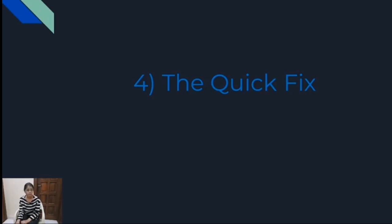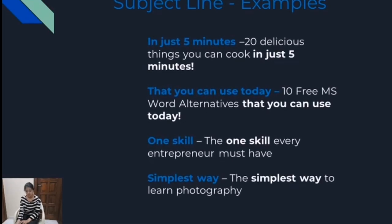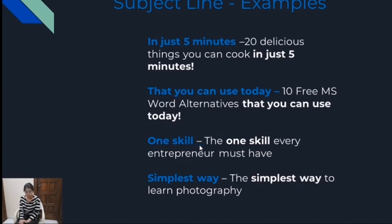Another type of subject line is the quick fix. Everybody is concerned about time — nobody has time to do anything, so they are looking for shortcuts. The quick fix is a very good way to provide them the easiest, shortcut solution. You can mention something like this in your subject line. Phrases you can use include: 'In just 5 minutes,' 'That you can use today,' 'One skill,' 'Simplest way,' 'Easiest way.' If you use these, you'll have more chances that people open your email. For example: '20 delicious things you can cook in just 5 minutes.' Other examples include: '10 free MS Word alternatives that you can use today,' 'The one skill every entrepreneur must have,' and 'The simplest way to learn photography.' These phrases are also very impactful and lead many people to open your emails.